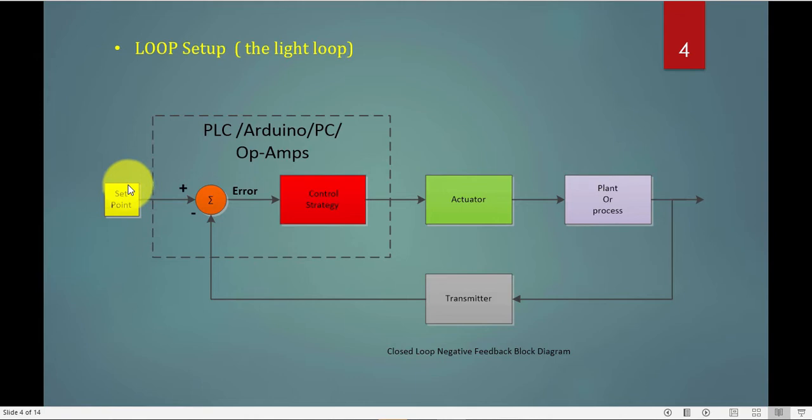It's the same loop at your house when you control the temperature. You set a temperature, 22 or 23 degrees, and the controller will read this temperature, the set point, and will read the current temperature in your room. We call it PV or process variable. The difference between them is the error. Based on the error, the control, and based on the control strategy and the algorithm in the control strategy, you will have a controller output.